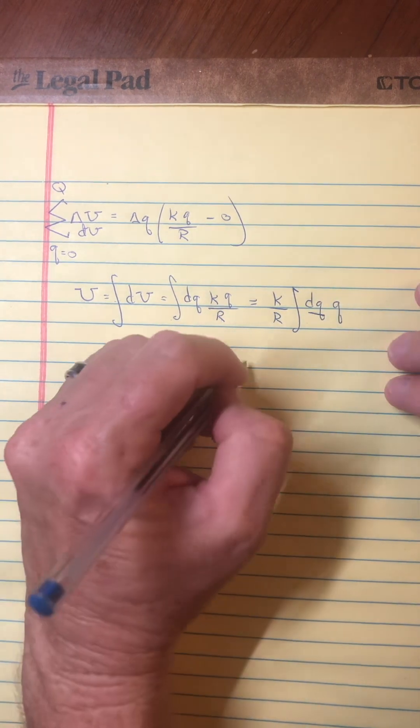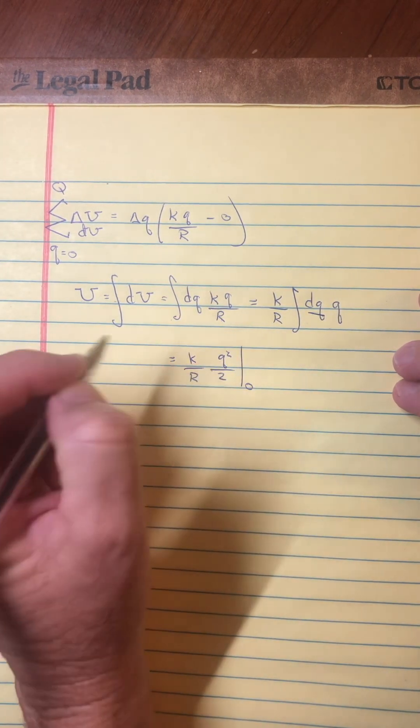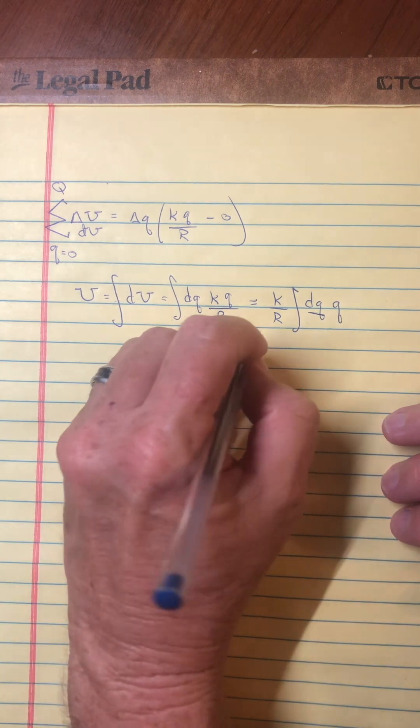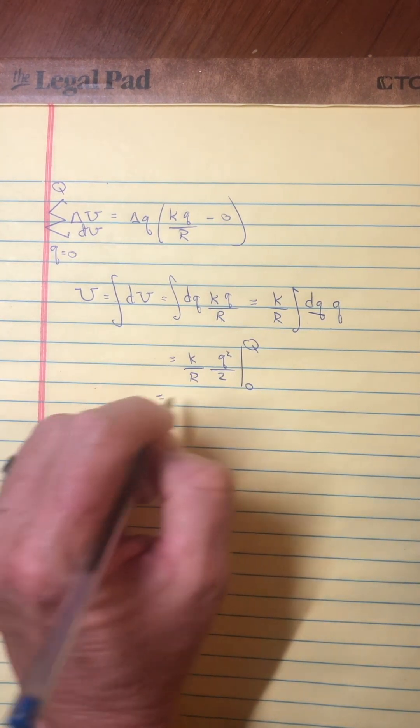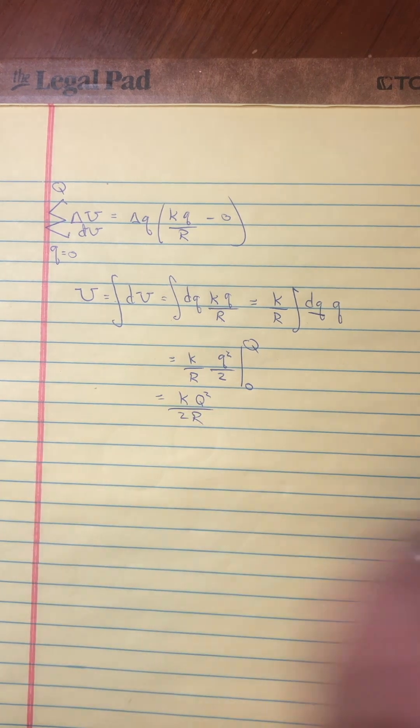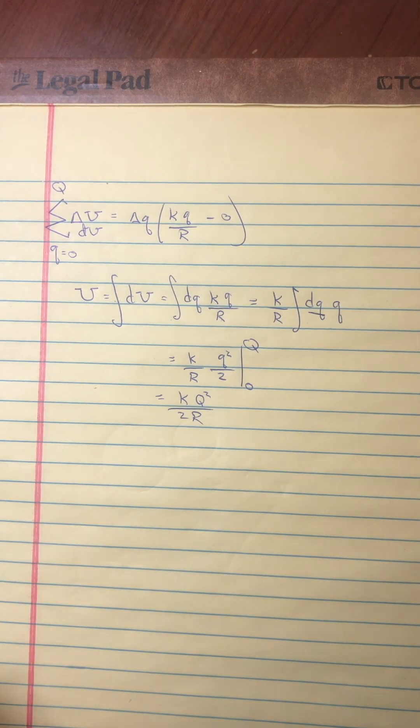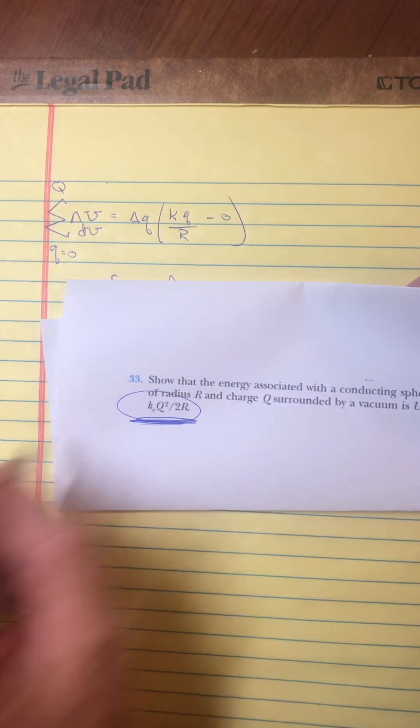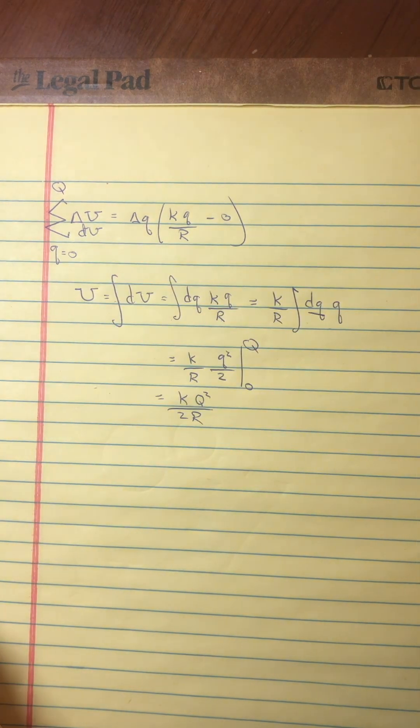And then of course you can put the limits straight on here. We're going to start with zero charge on it and build up to capital Q. So this just becomes KQ squared over 2R, which is what they asked us to show the energy is equal to. Alright, hope that helped. Take care.